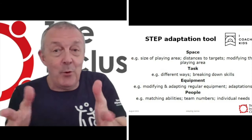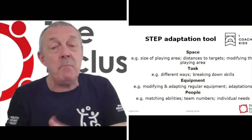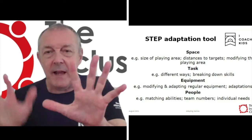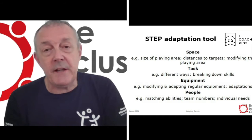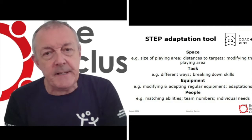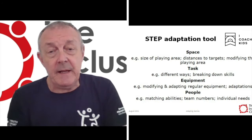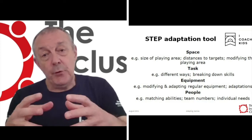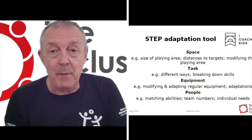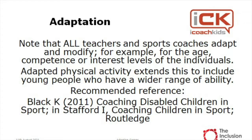And finally, People — this is the important aspect — and that's the way that people interact with each other. It could be team numbers; we can vary the team numbers. We don't always have to have equal teams like five against five. We may decide to have seven against three, and that may create a balanced activity — seven people with a lower skill level against three people who have a higher skill level but have to work very hard. So we can balance the activity by looking at team numbers and each of these areas in the STEP tool.